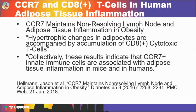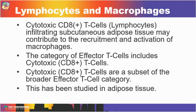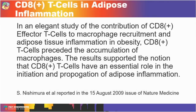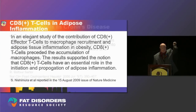Another role of CD8-positive cytotoxic T cells in adipose tissue is that they can both recruit and activate macrophages. Studies have found that these CD8-positive T cells actually precede macrophage recruitment in the adipose tissue, and these results support the notion that CD8-positive T cells have an essential role in both the initiation and the propagation of adipose inflammation.